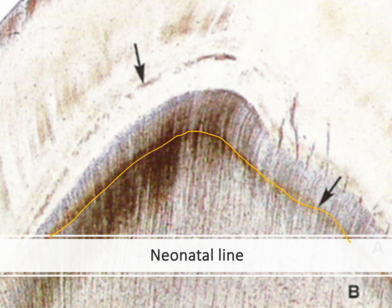The neonatal line is found only in primary teeth and in the first permanent molar, because these are the teeth that start calcification of dentine in utero. It is usually located very near the dentino-enamel junction and is not continuous across the whole dentine width. You would also most likely see a corresponding line in the enamel at the same location — that is how you can definitively identify it as the neonatal line in dentine.